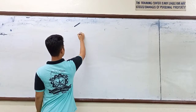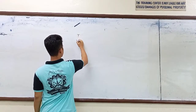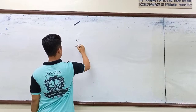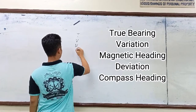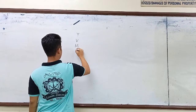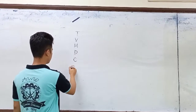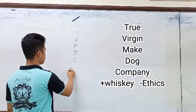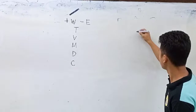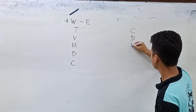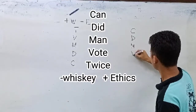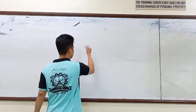There are factors that we need to remember when correcting compass, namely the true bearing, variation, magnetic heading, deviation, and compass heading. There are two formulas or abbreviations we need to remember: the TVMDC, or 'True Virgin Make Dog Company plus Whiskey minus Ethics,' and the CADMVT, or 'Candid Man Vote Twice minus Whiskey plus Ethics.'